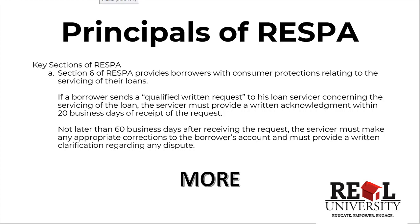Let's dive into the three most common violations and the three most common sections that you will deal with. We are going to talk a little bit about Section 6. The fourth section is Section 6. Section 6 of RESPA provides borrowers and consumer protection relating to the servicing of their loans.